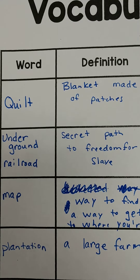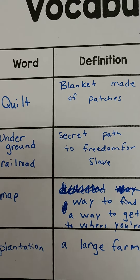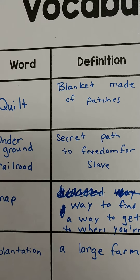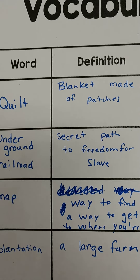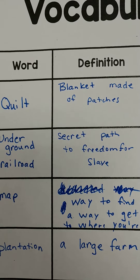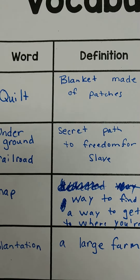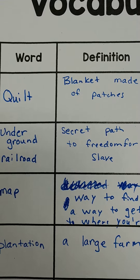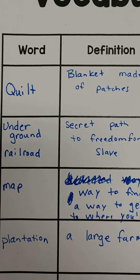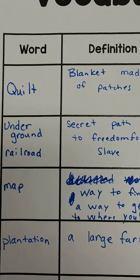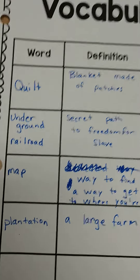Underground Railroad is the second word. It's a secret path to freedom for slaves. People who were sympathetic to slaves' needs would use their house and hide slaves during the day so they could be safe. Then at night, the slaves would leave and go to the next stop. These houses were a couple miles away.